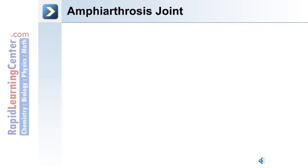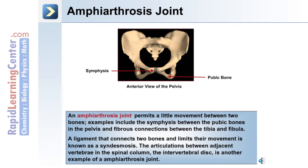Amphiarthrosis joints allow more movement than a synarthrosis joint. An example is the symphysis between the two pubic bones. An amphiarthrosis joint permits a little movement, and examples include the symphysis as well as the fibrous connections between the tibia and fibula. A ligament that connects two bones and limits their movement is known as the syndesmosis.